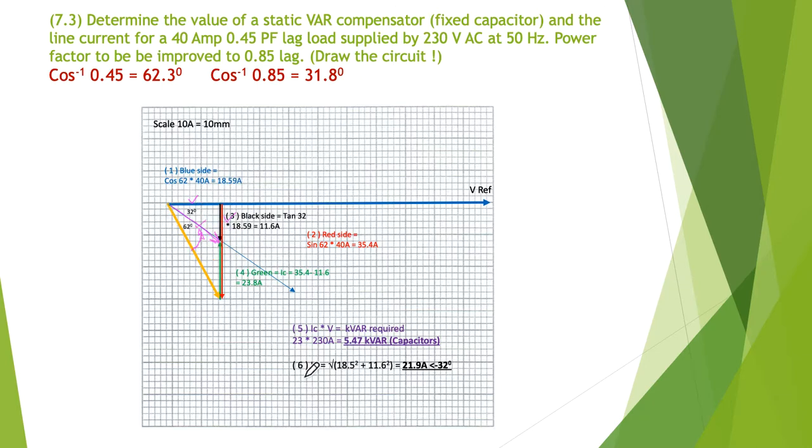We can use Pythagoras because we know this length and that length. Our 18.5 squared plus 11.62 squared, take the square root, tells us we've reduced our current from 40 amps down to 21.9 amps. This original one was 40 amps in length, and we've now reduced this to 21 amps.